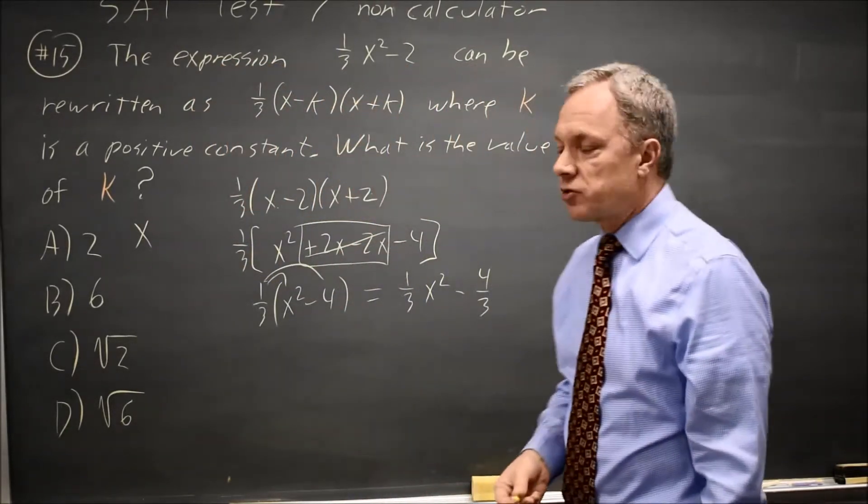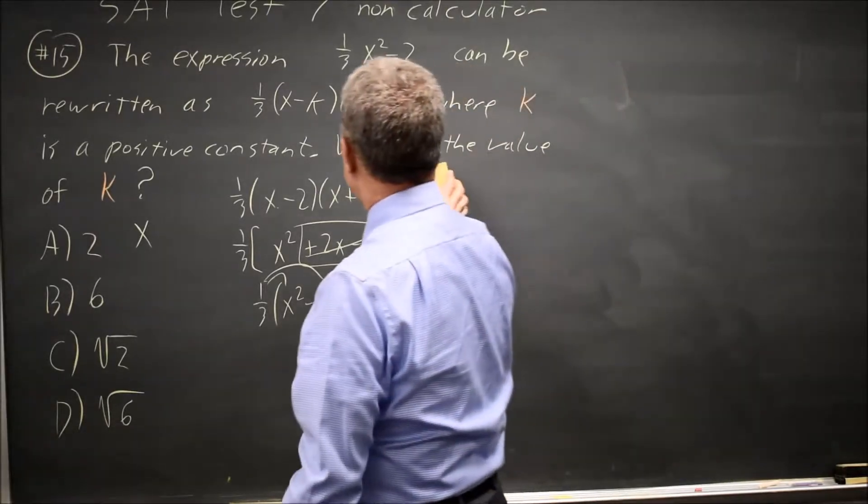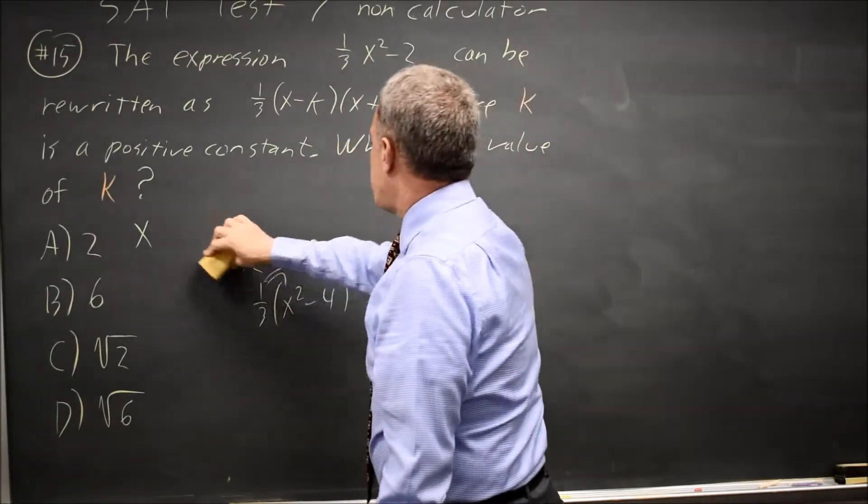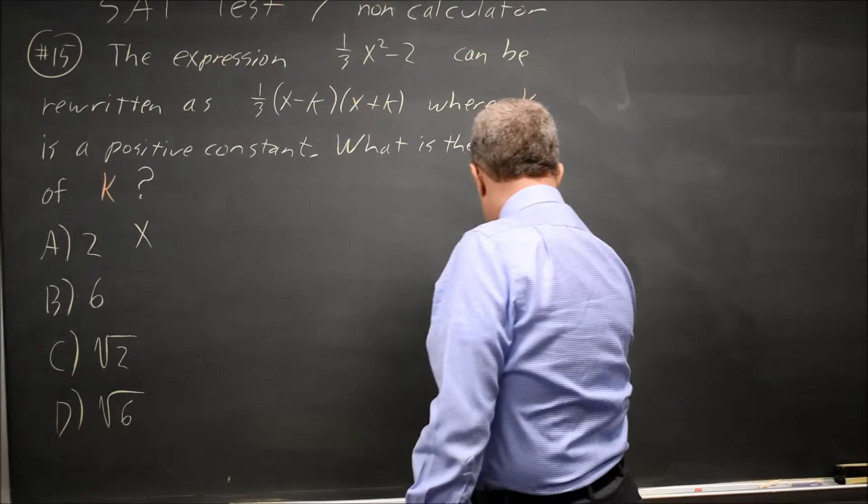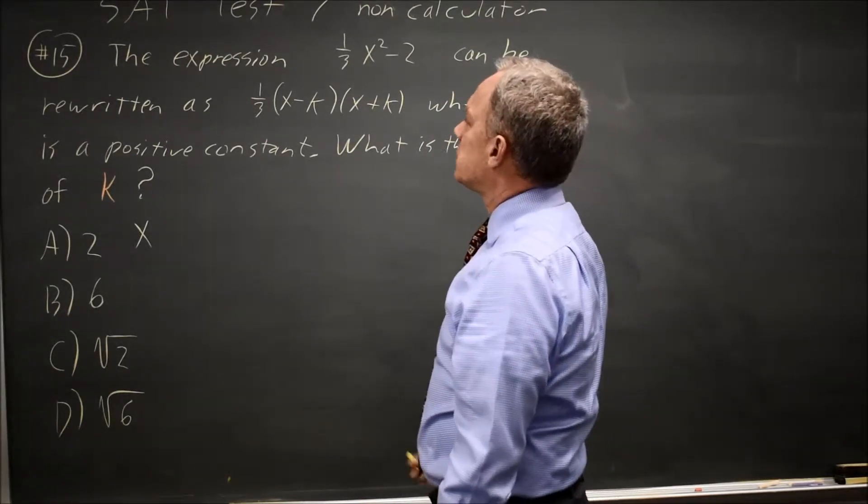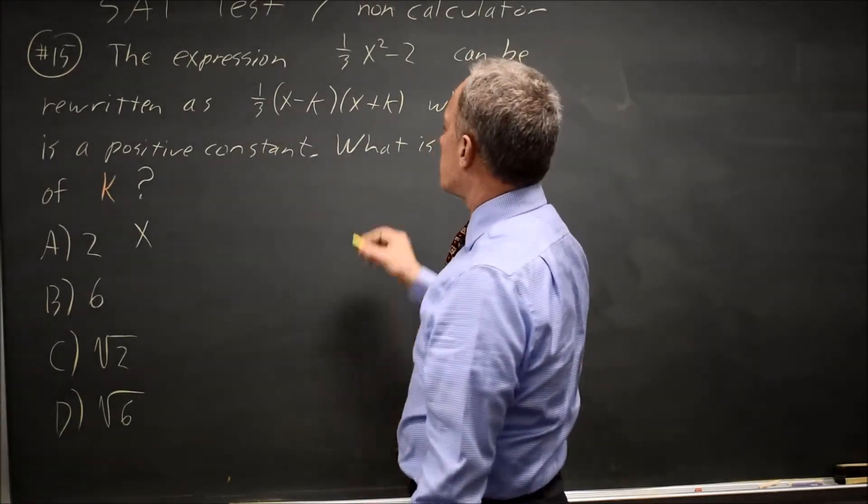And I could continue through the choices that way, but I have another option if I recognize that this is a difference of two squares in their factoring, but they want a common factor of 1/3.